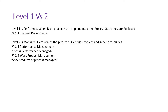What is Level 1? Level 1 is performed — it is talking about when all of your base practices are implemented and associated process outcomes are achieved, then it is said to be at Level 1. PA 1.1 is talking about process performance.